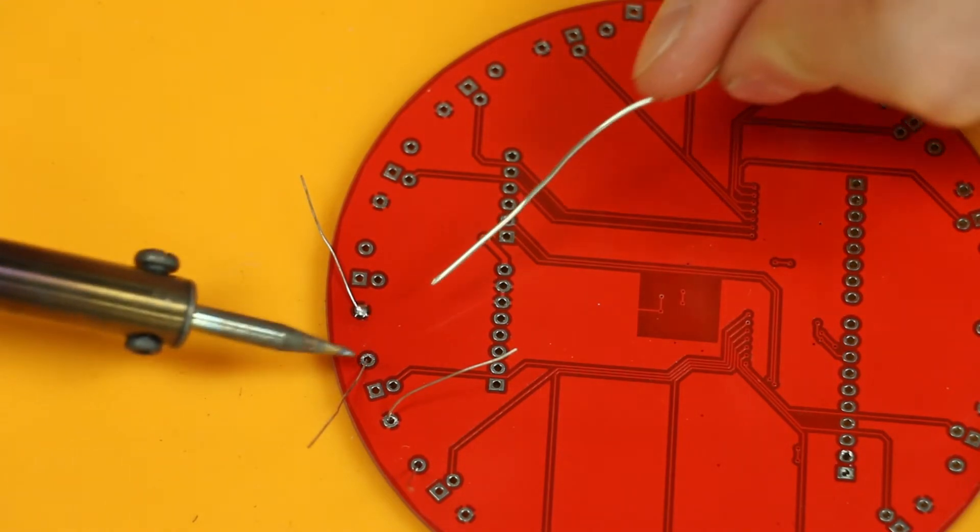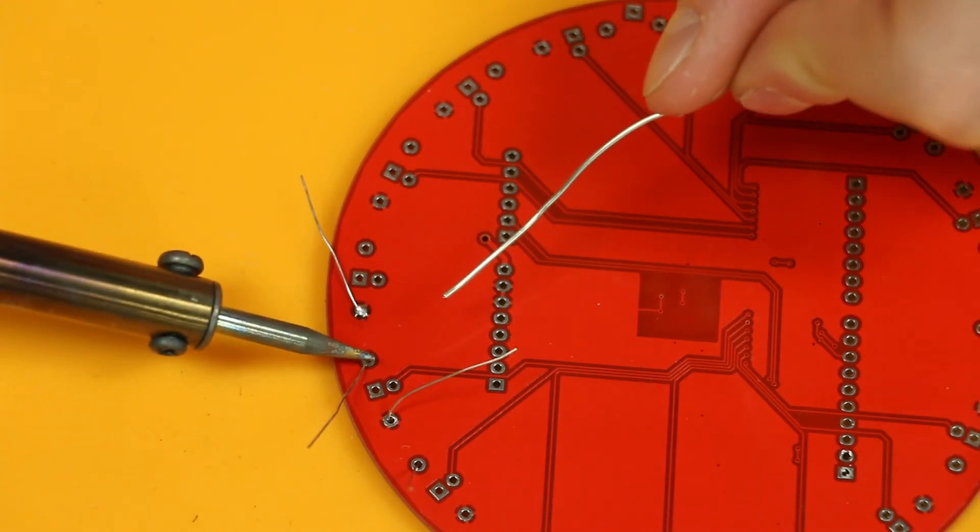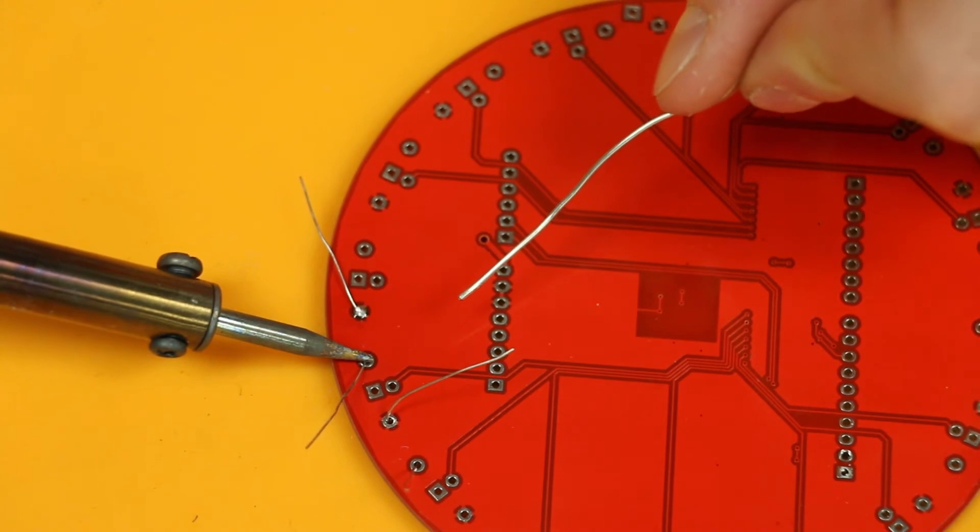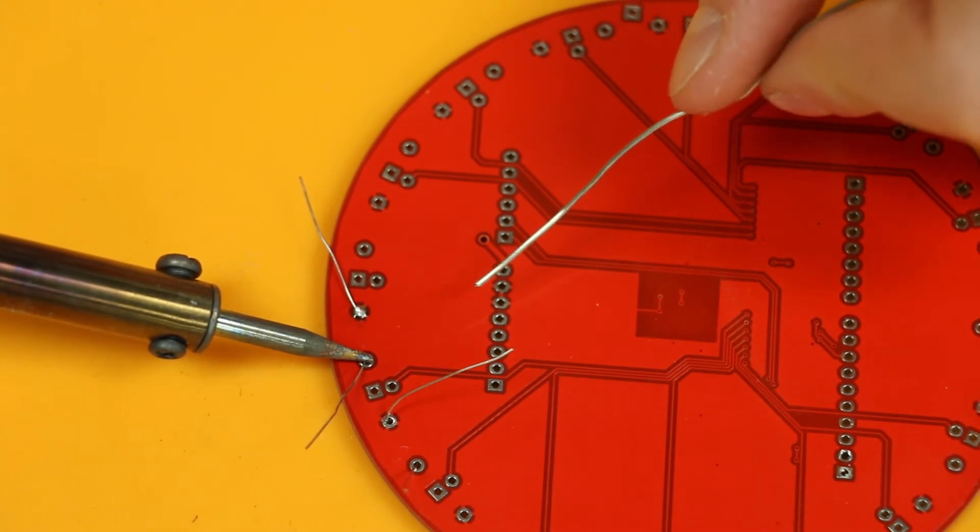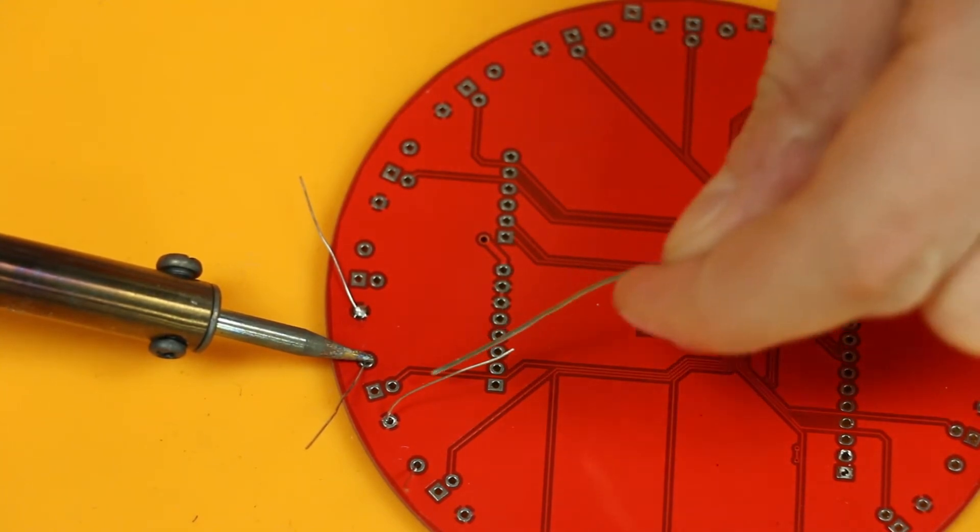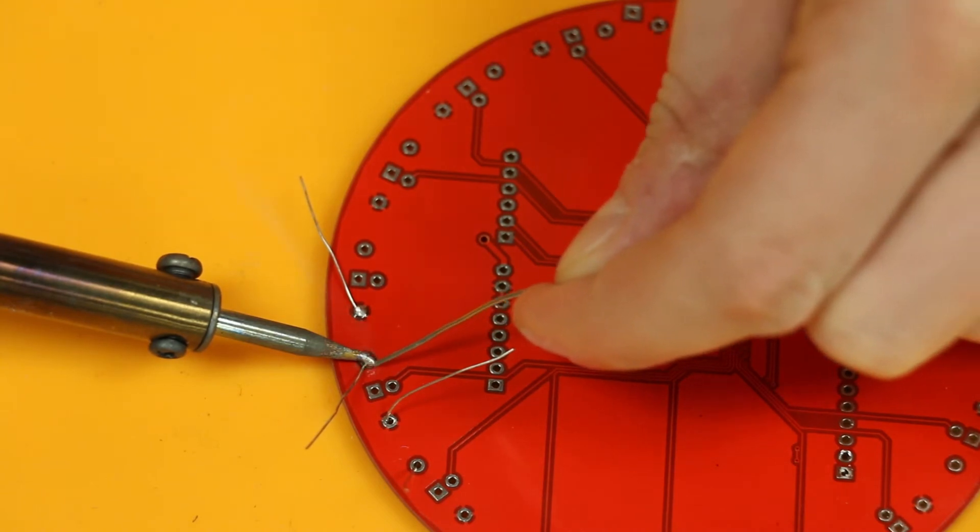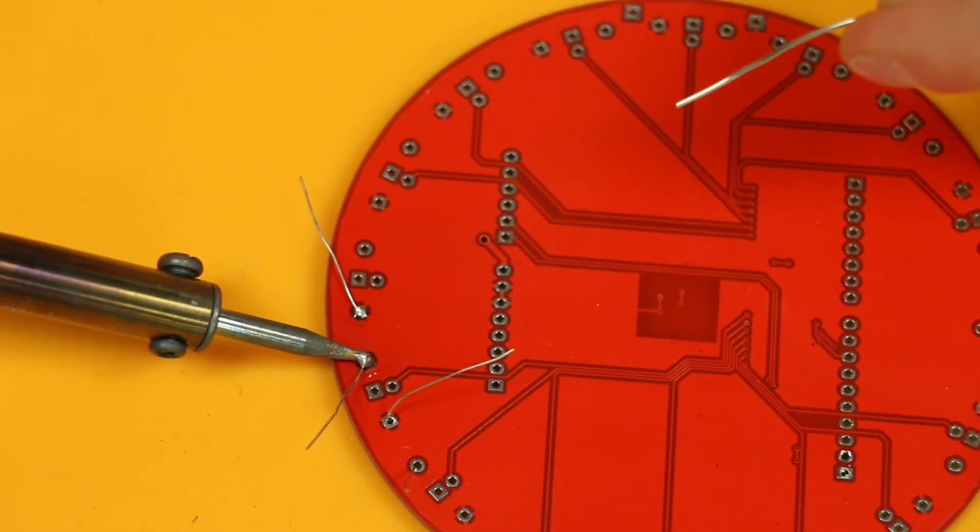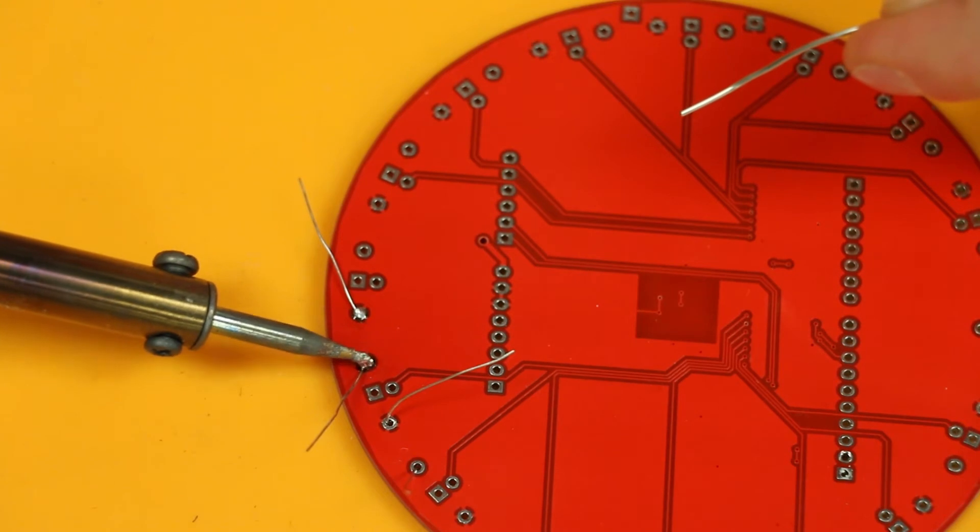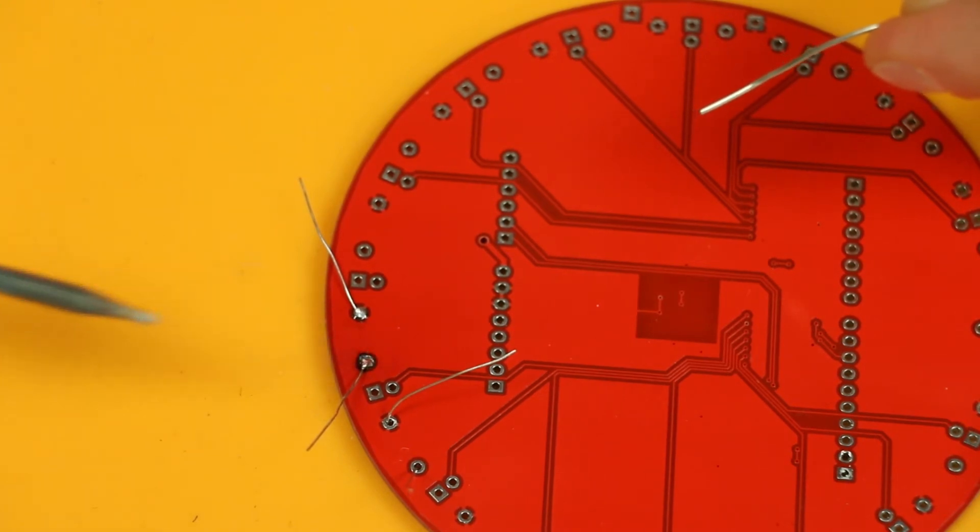And we're going to be doing the same thing on the other pad. You hold it to the pad and the lead from the component. Let it heat up. And then we can push some solder wire into the joint. And then remove our soldering iron.